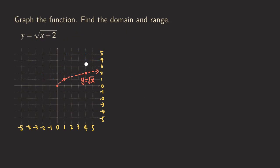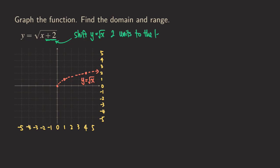Okay, let's continue graphing square root functions with another example here. This time the plus two is inside the square root, compared to the previous example. This plus two right here is actually telling us that we are going to shift the parent function — so shifting y equals square root of x — two units to the left. I already graphed this one here just to save time, and you can see those are still the three key points right here.